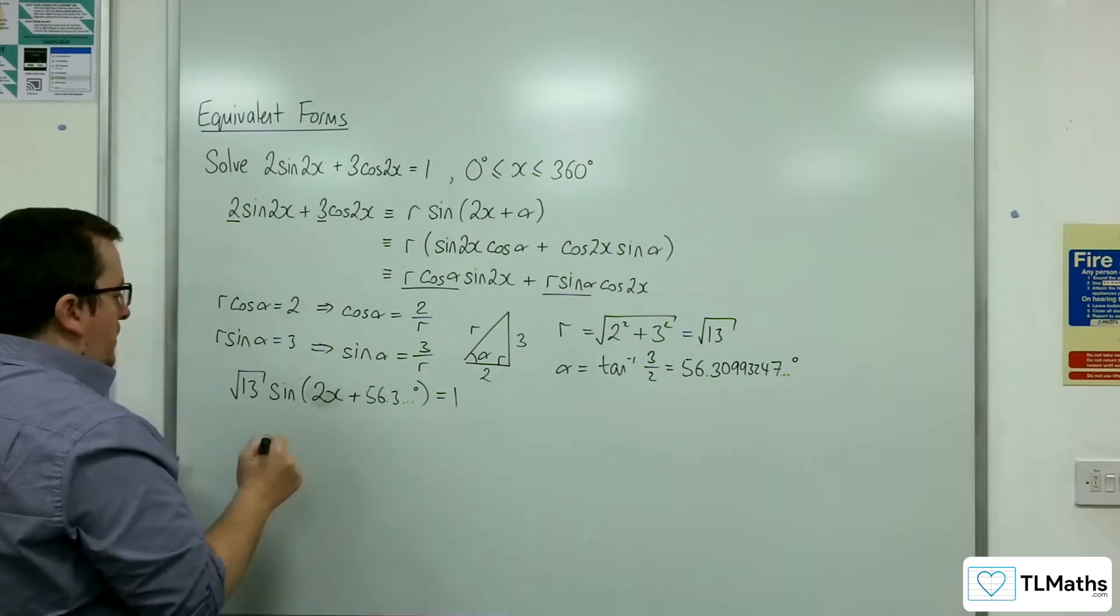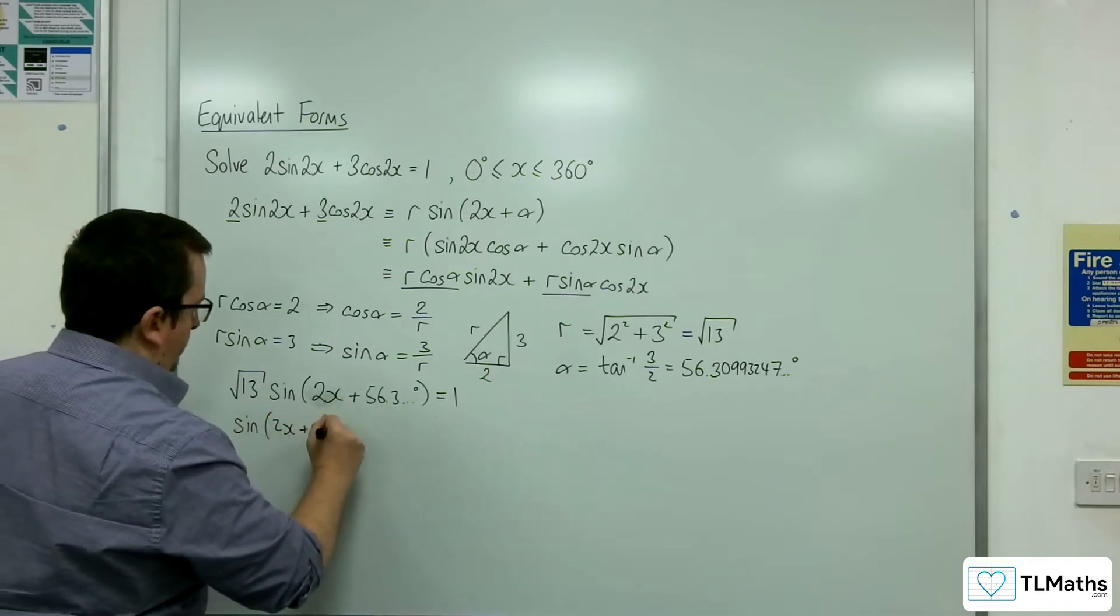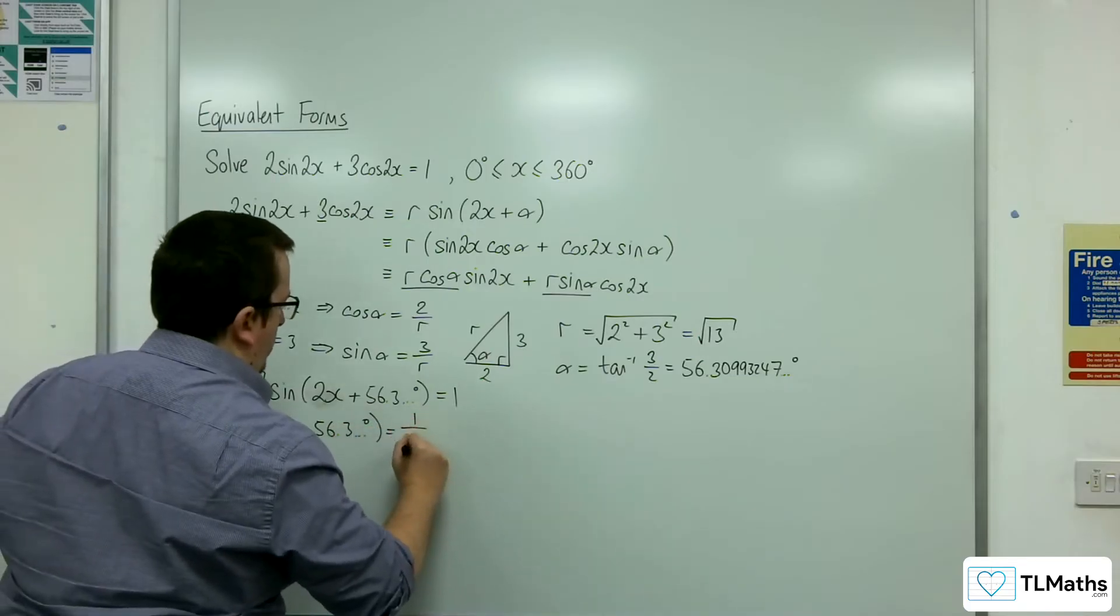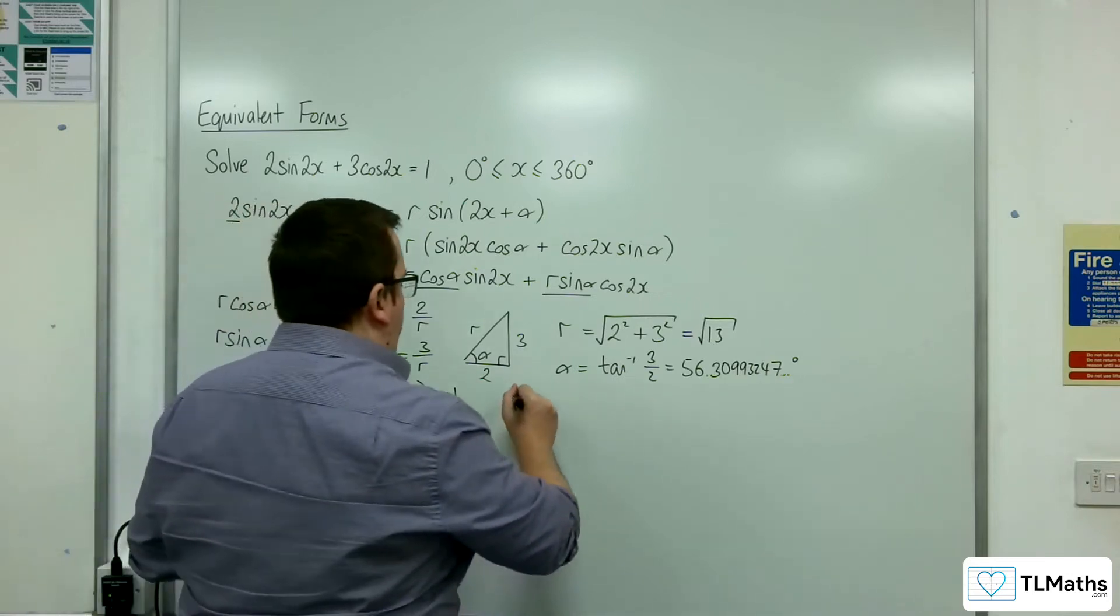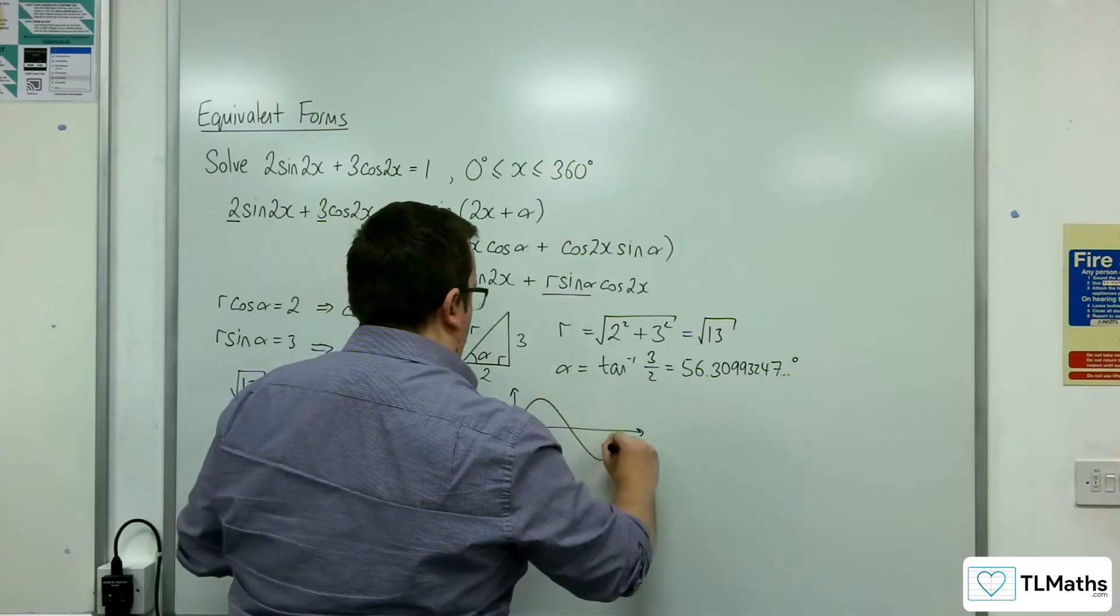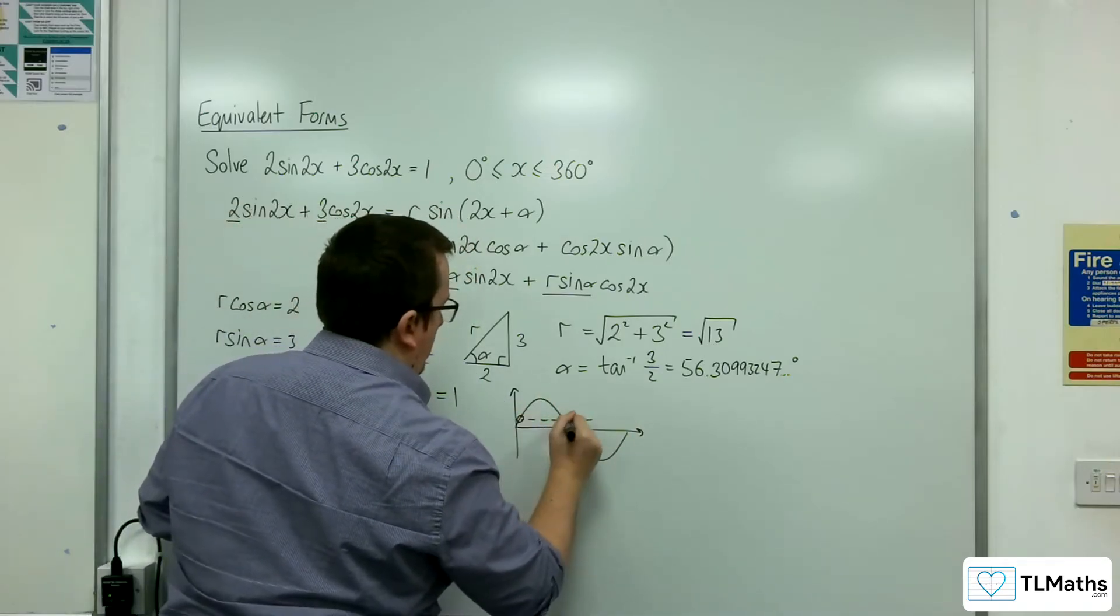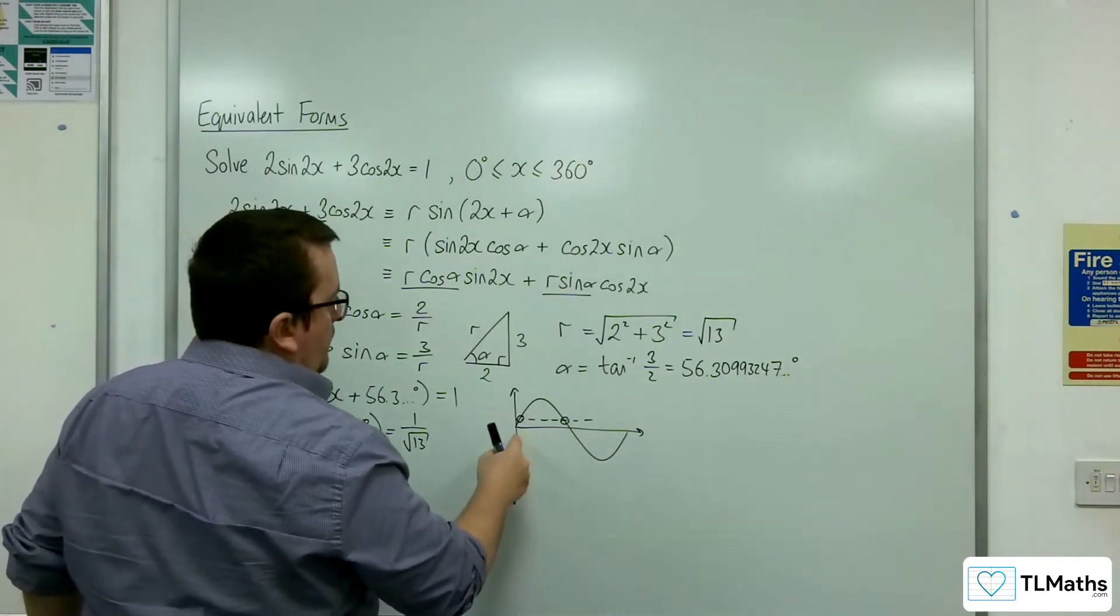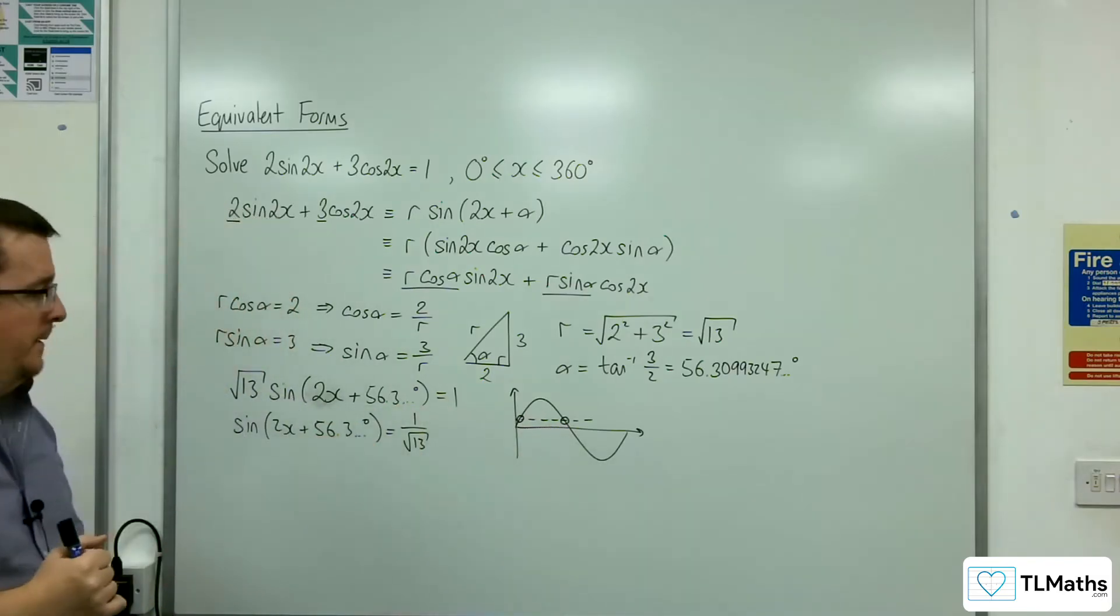So sine of 2x plus alpha equals 1 over root 13. I'm going to do a quick little sketch of sine. Two solutions there, just reminding me that the first solution I find, I've got to subtract the next one from 180.